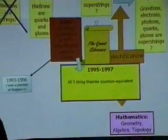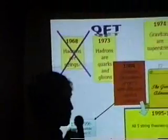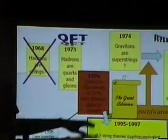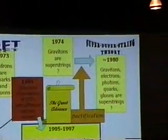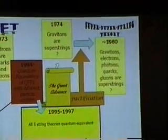This picture, we started off in this corner with hadrons being strings, and then hadrons turned out to be quarks and gluons. Too bad, but maybe gravitons are strings, well, super-strings, maybe everything's super-strings. Got to figure out the compactification issue though, and we're sort of stuck on that one.